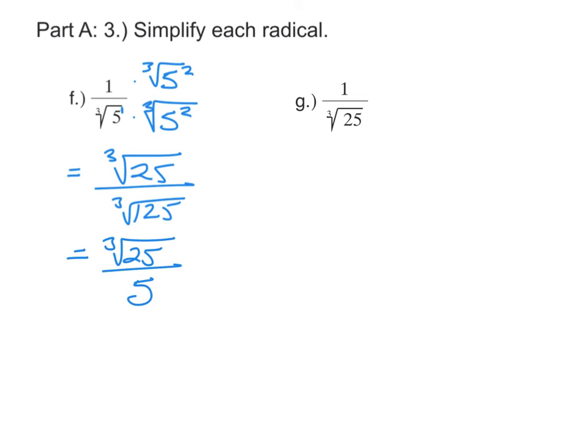Similarly, when we have 1 over the cube root of 25, it's important to think about that as 1 over the cube root of 5 squared. Now I see that, in order to get a perfect cube in the denominator, I only need one more 5.